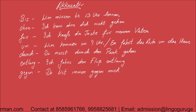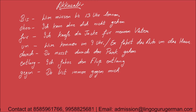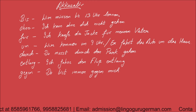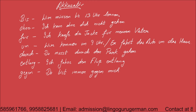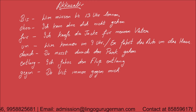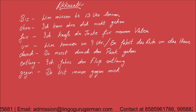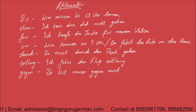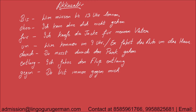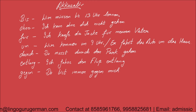Now for accusative preposition examples: Ohne — 'Ich kann ohne dich nicht gehen.' Für — 'Ich kaufe die Jacke für meinen Vater.' Um — 'Wir kommen um neun Uhr.' 'Er fährt das Auto um das Haus.' Durch — 'Du musst durch den Park gehen.' Entlang — 'Ich fahre den Fluss entlang.' Gegen — 'Du bist immer gegen mich.' When we have a noun or pronoun with these prepositions, it is accusative.